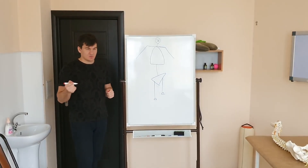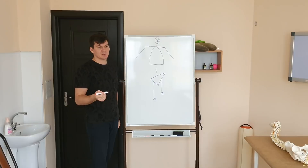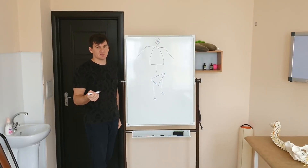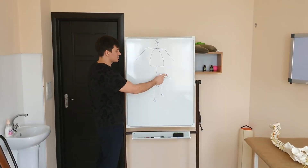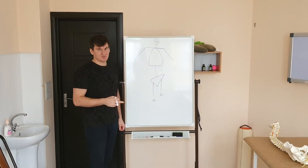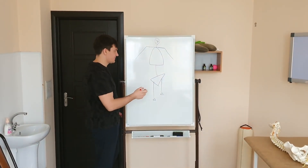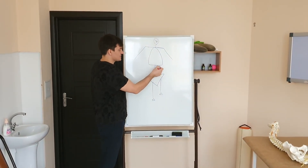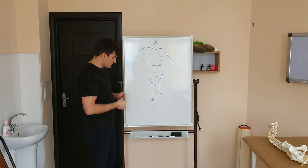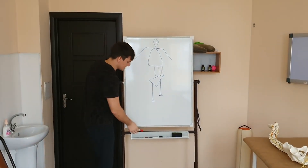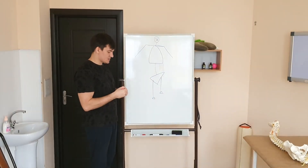In general, scoliosis never occurs without a change in the position of the pelvis, and most often it turns out that one side of the pelvis is higher and the other is lower. This happens because there is different muscle tone on the right and left sides.